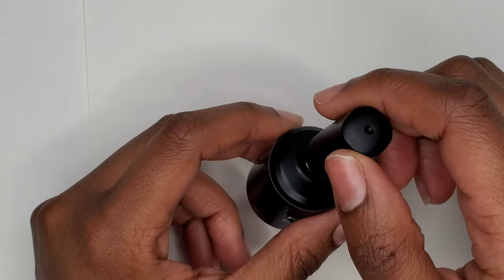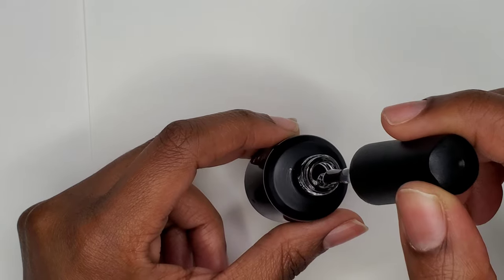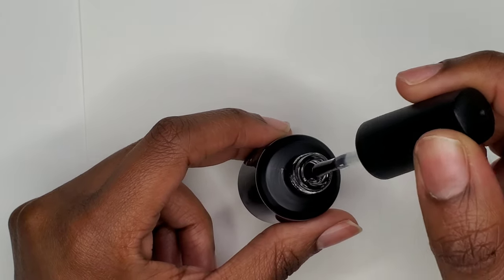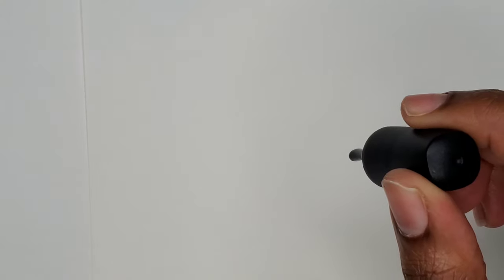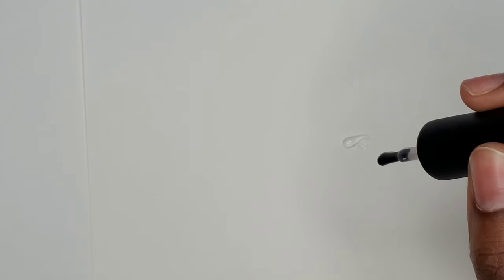I wanted to start out by showing you guys the consistency of a regular base coat. As you can see, it is kind of thin and a little watery. The main difference you will notice between a regular base coat and a rubber base coat is the consistency. A rubber base coat is very thick. As you can see, it is taking a little bit of time for it to fall off of my brush. It is actually almost clinging to the brush.